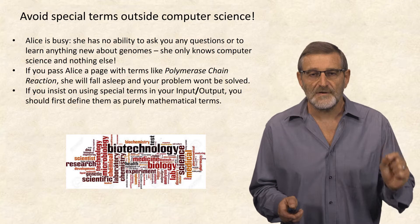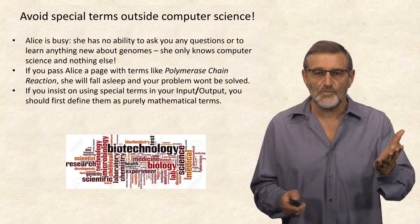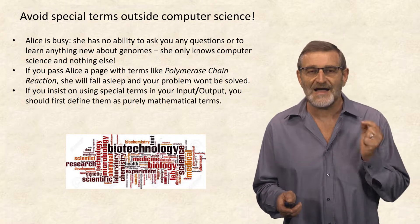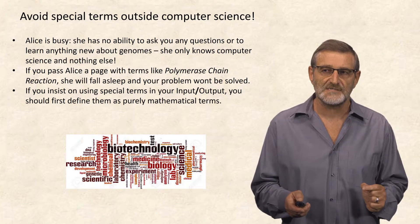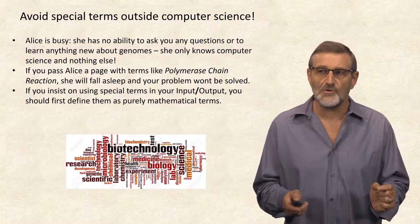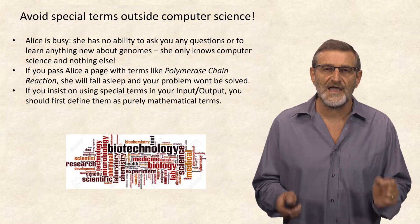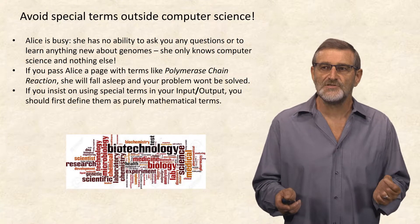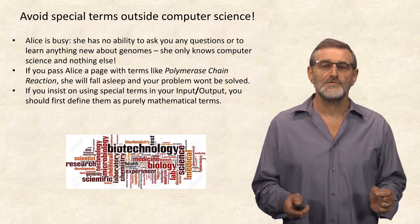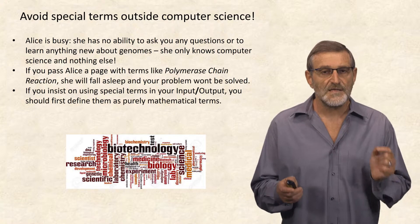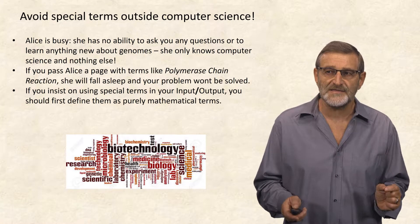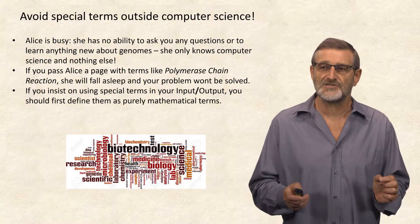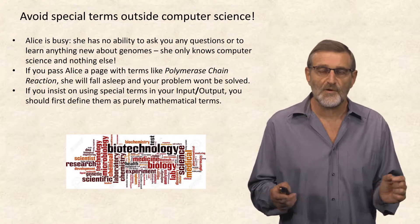When you write this single page that you pass to Alice, avoid special terms outside computer science. Alice is not a biologist, and she is busy. She has no ability to ask you any question or to learn anything new about the genome. She only knows computer science. If you pass Alice a page with terms like polymerase chain reaction, she will fall asleep and your problem won't be solved.